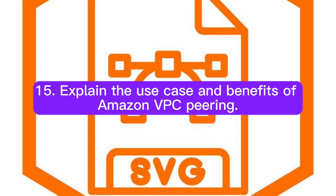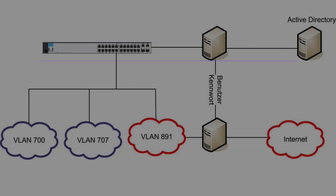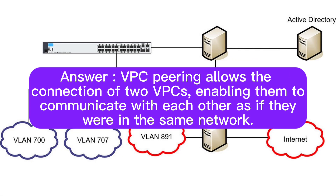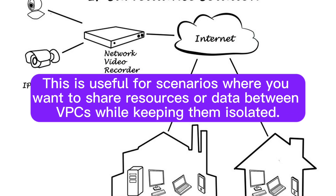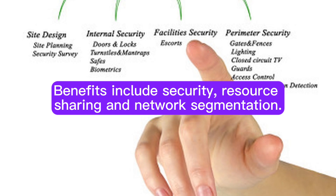Question 15: Explain the use case and benefits of Amazon VPC peering. VPC peering allows the connection of two VPCs, enabling them to communicate with each other as if they were in the same network. This is useful for scenarios where you want to share resources or data between VPCs while keeping them isolated. Benefits include security, resource sharing, and network segmentation.